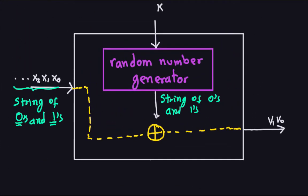So we actually did this part already — we took an input of zeros and ones and put it into a string. What we need to do now is the part where the user puts a password in. It's going to produce a sequence of zeros and ones, and it's going to be a random sequence. This is really important: the random sequence of zeros and ones has to be exactly the same length as the sequence the user input, because we're going to do a bitwise XOR.